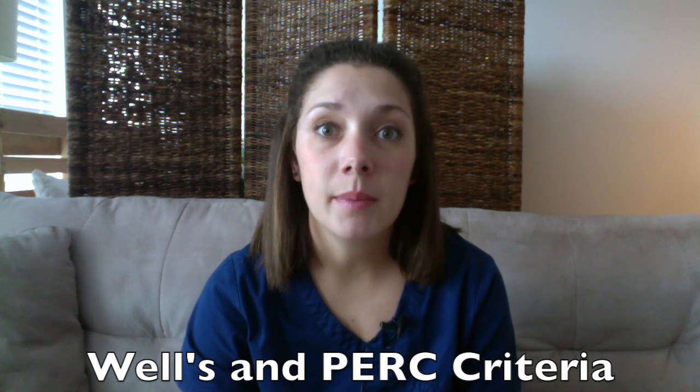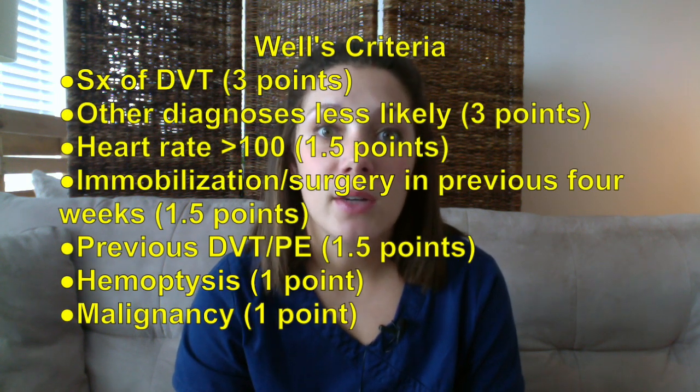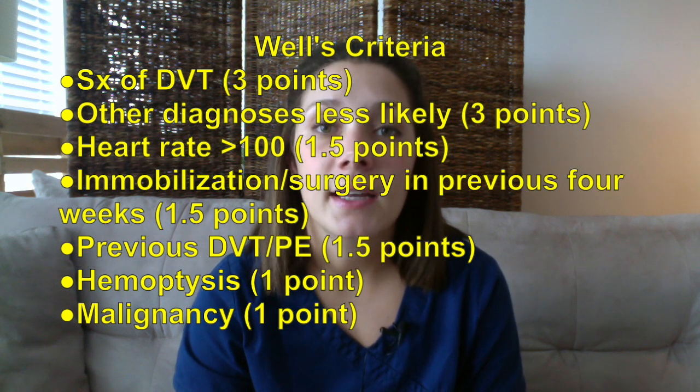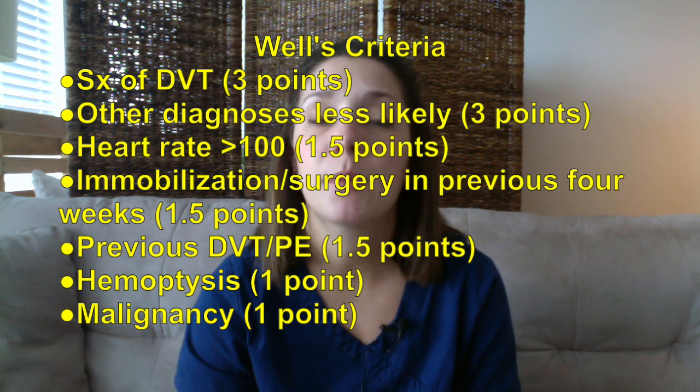The first two I want to talk about are the Wells and PERC criteria. These are quite common — people use them often in decision-making to either rule in or rule out a pulmonary embolism as a differential diagnosis. I usually start with the Wells criteria; it's a list of risk factors and symptoms the patient may be having. If they have a score greater than four, that's high probability for a pulmonary embolism, and I go straight to a CT of the chest. If it's less than four but they have some PERC criteria that are concerning, I grab a D-dimer.